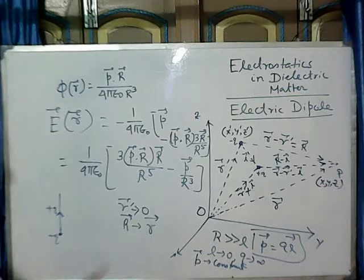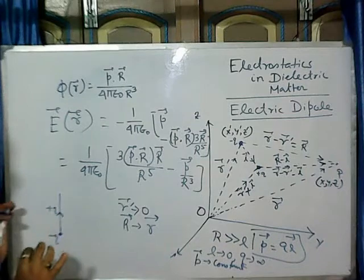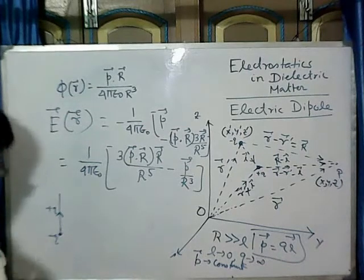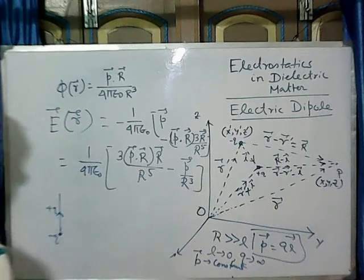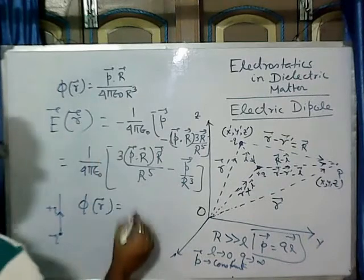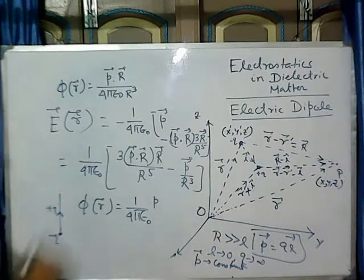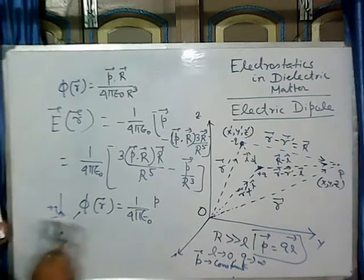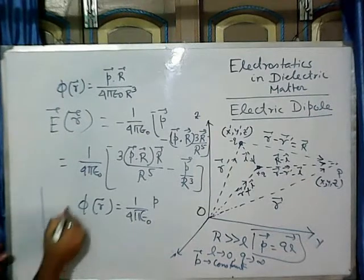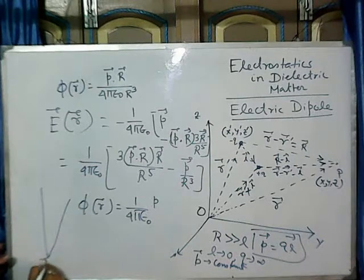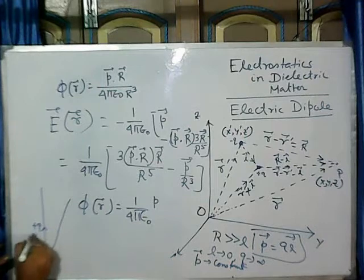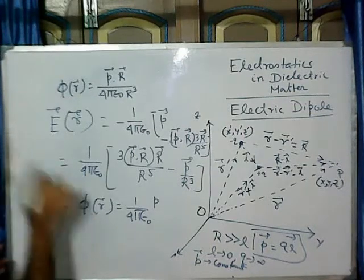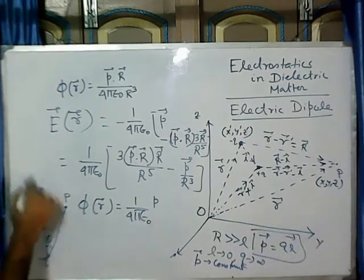Now we are considering a dipole with the minus charge at the origin. So what will be the form of phi? The phi form will be 1 by 4π epsilon naught times P. And if this is the point P — let me draw it a little bigger — here is the minus Q charge at the origin, this is plus Q charge, this is the P vector, and this is the Z axis. I want to find out the potential and the electric field at this point.